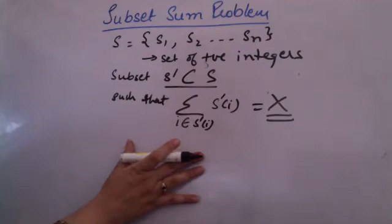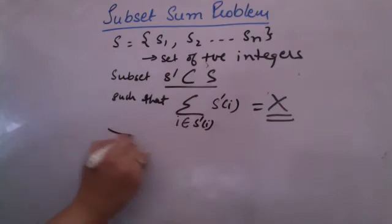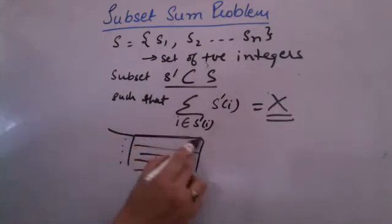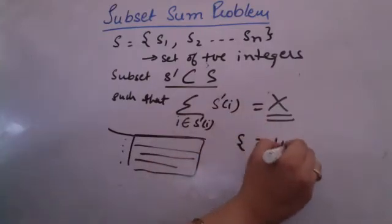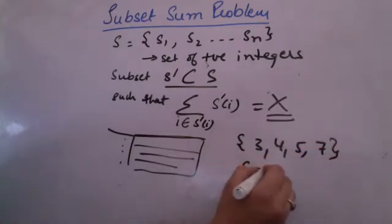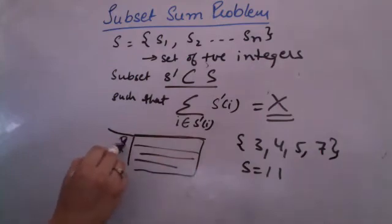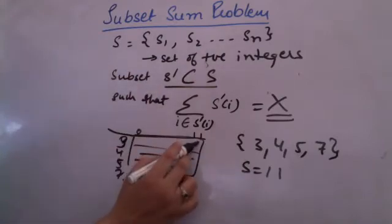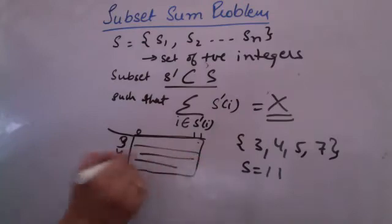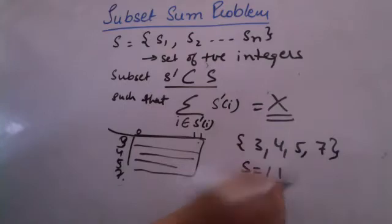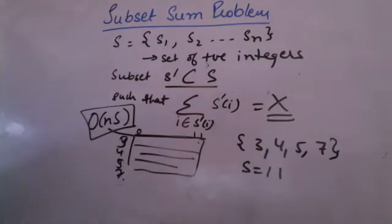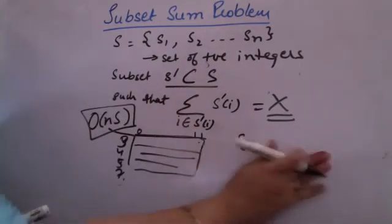If you recall the dynamic programming approach, we were creating a matrix in which we were taking the set items in rows and the total sum on the columns — for example, 3, 4, 5, 7 — and looking for a sum equal to 11. There were 4 rows and 0 to 11 columns. The size of the problem using dynamic programming was N times S, where N is the number of elements.